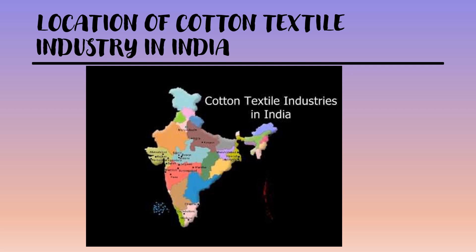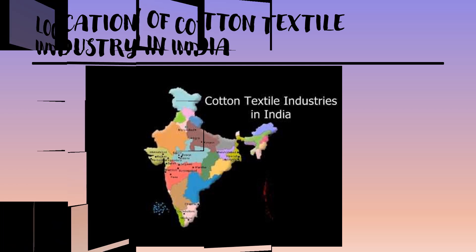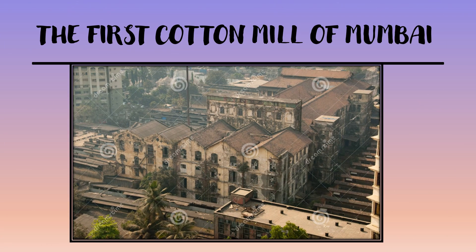The first cotton textile mill was set up in Mumbai in 1854. Mumbai is also the largest centre of cotton textile production and is thus known as the Cottonopolis of India.